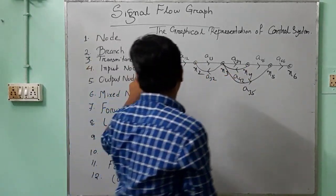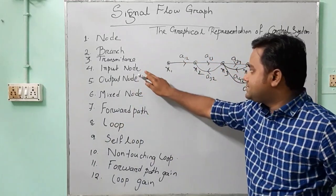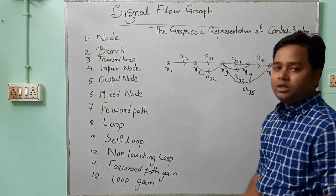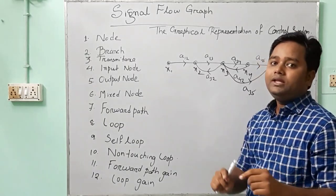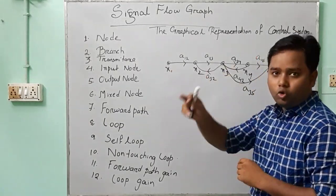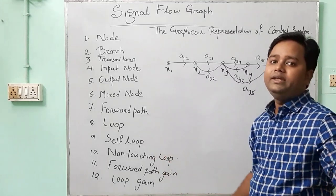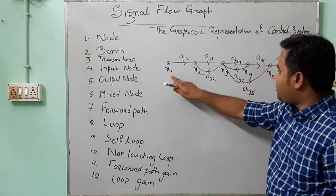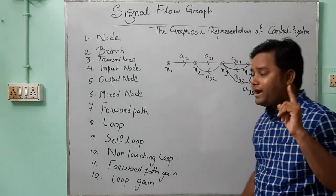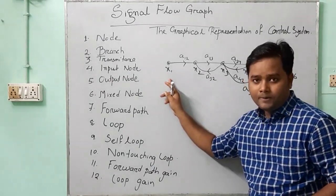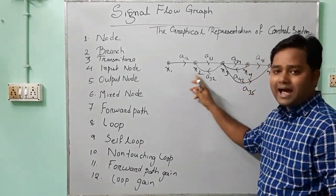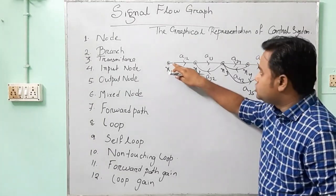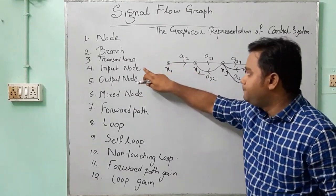Then we go for the input node. What is the input node? Input node means, in the graphical representation, the point from which only the signal is outgoing — no incoming signal is there. That means, from X1, the signal is outgoing with no incoming signal at X1. So X1 is the input node.